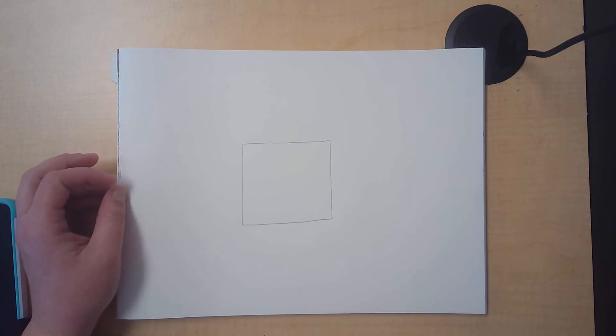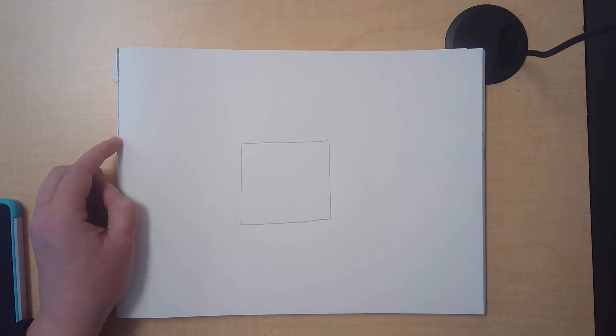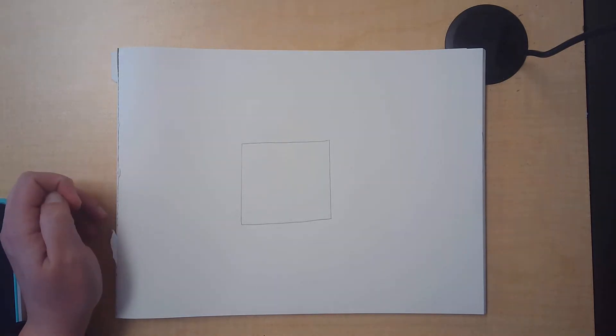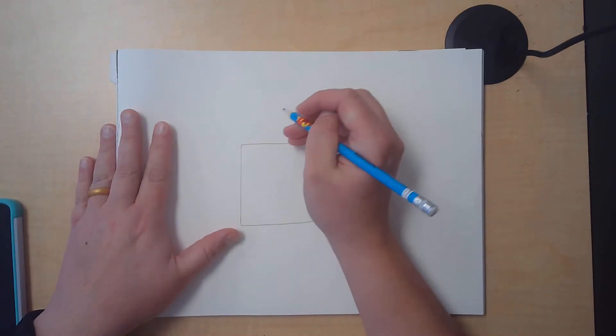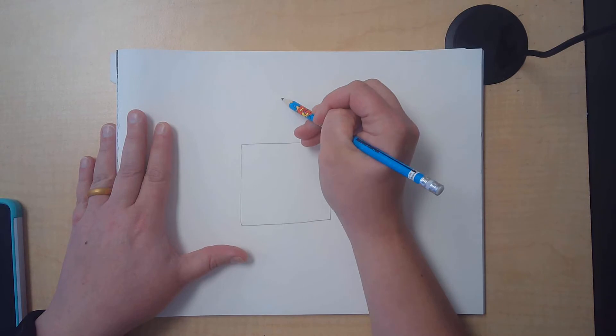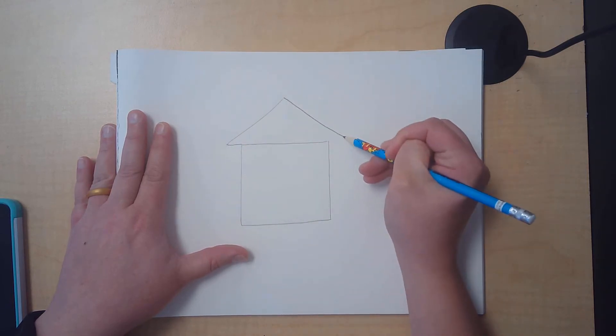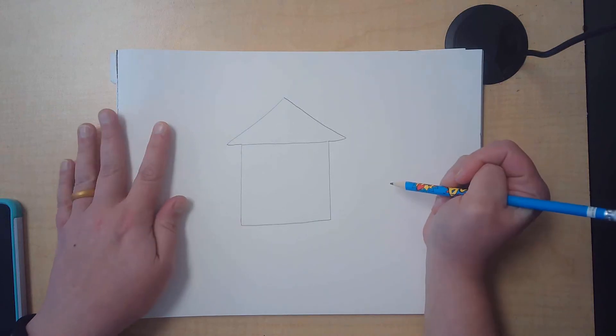Most houses have roofs and most roofs are kind of pointy, just like which three-sided shape? If you answer triangle, ding ding ding, you are correct. Let's put a nice triangle on top of our square to give our house a nice roof.